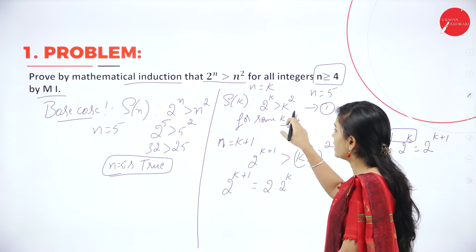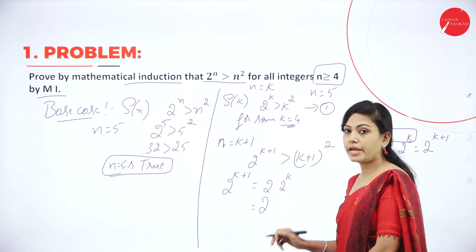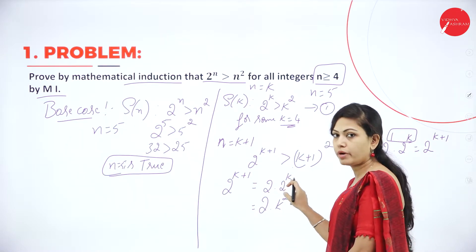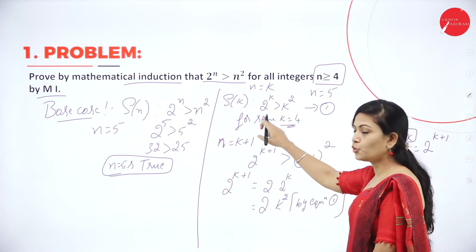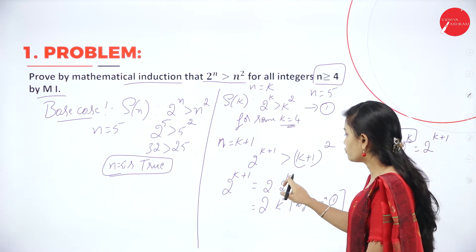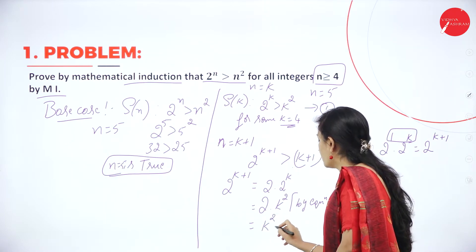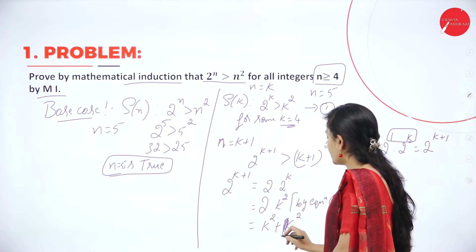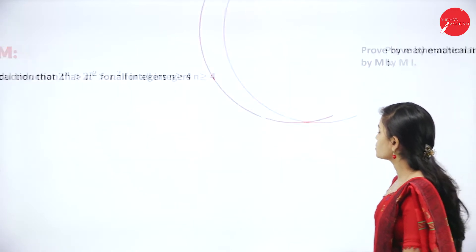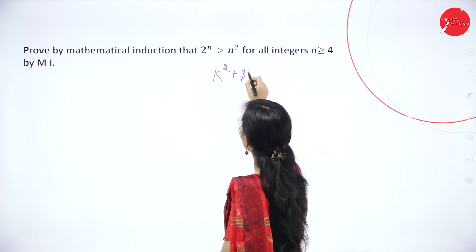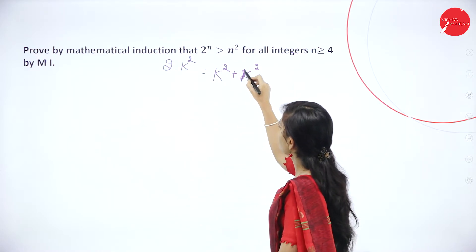So in place of 2 power k I can write k square by equation number 1. So 2 into 2 power k means 2 into k square, which equals 2k square. Now 2k square means I can write it as k square plus k square — splitting 2k square as k square plus k square.